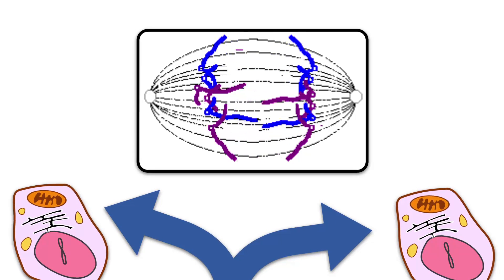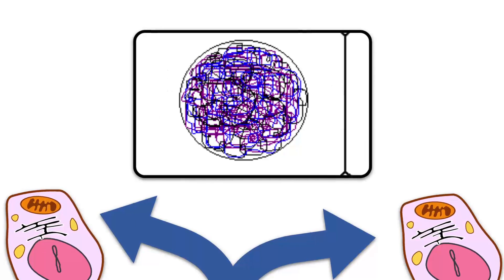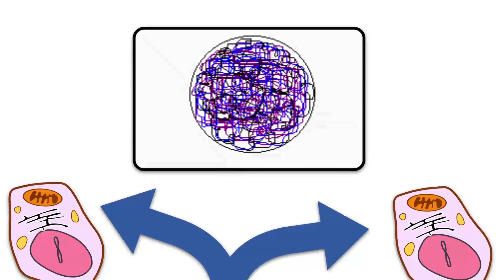Following mitosis, a new cycle begins when the G1 phase starts, providing that all necessary conditions for the next cell division are fulfilled.